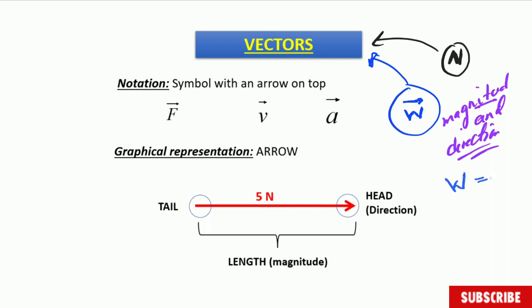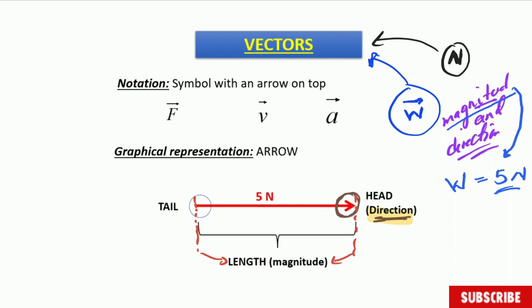For example, if weight equals 5 Newtons written without the arrow, it means direction is not taken into consideration — we are only referring to the magnitude, even though it is a vector quantity. This is quite important. Now, in terms of representing vector quantities graphically, we use an arrow where the head of the arrow gives you the direction, and the length of the arrow from tail to head gives you the magnitude.